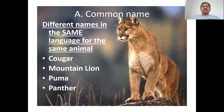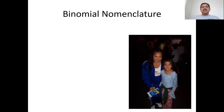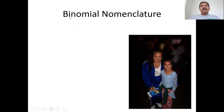That might be a little confusing. So in science, we have something called binomial nomenclature. Binomial — bi like bicycle — means two. Nomenclature is a system of naming things. So this is a two-word naming system.